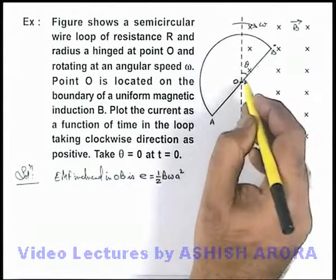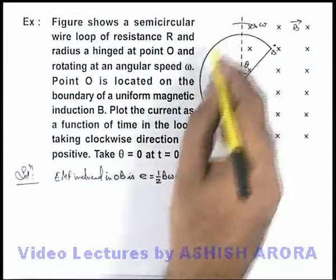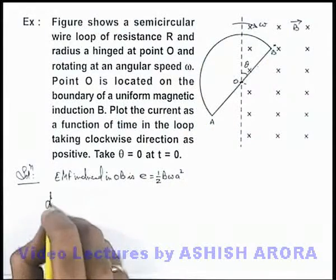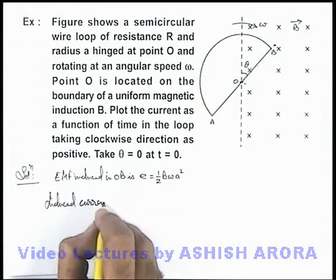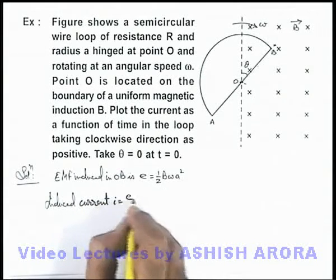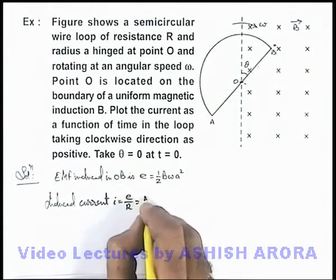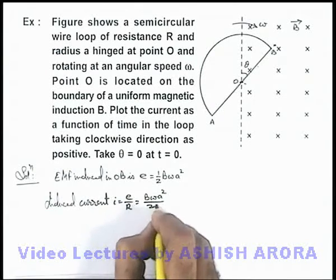Due to this EMF, an anticlockwise current is produced. The induced current in the loop can be given as i equals E by R, which is B omega a squared by 2R.